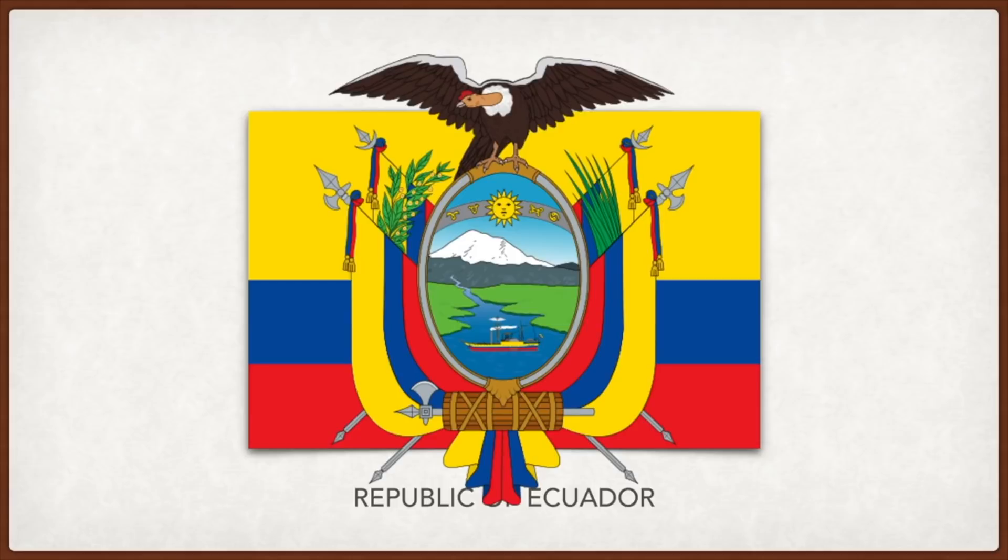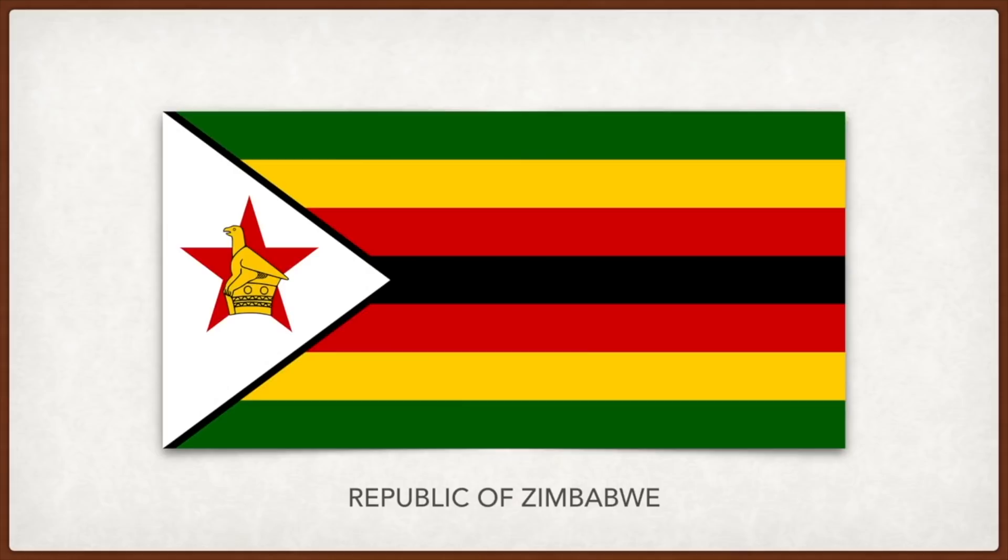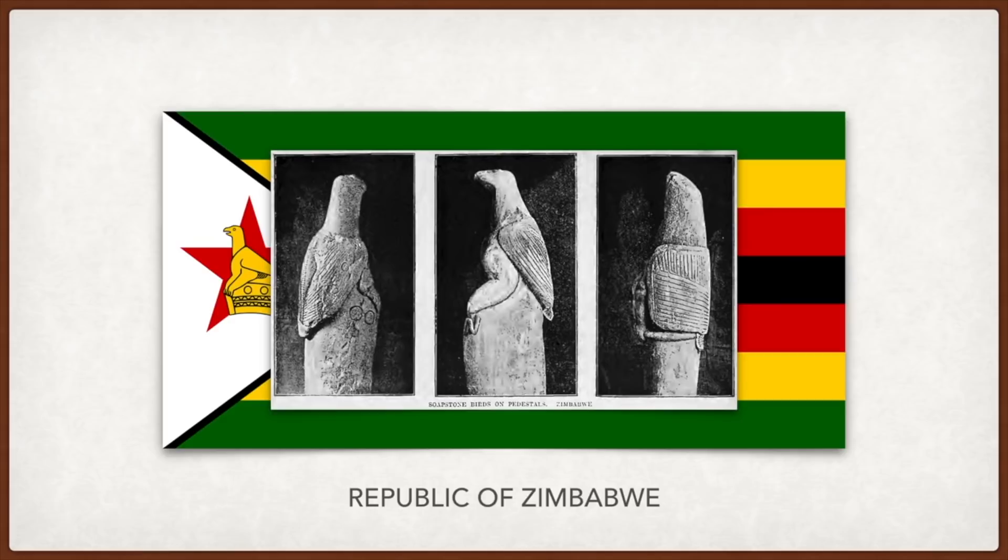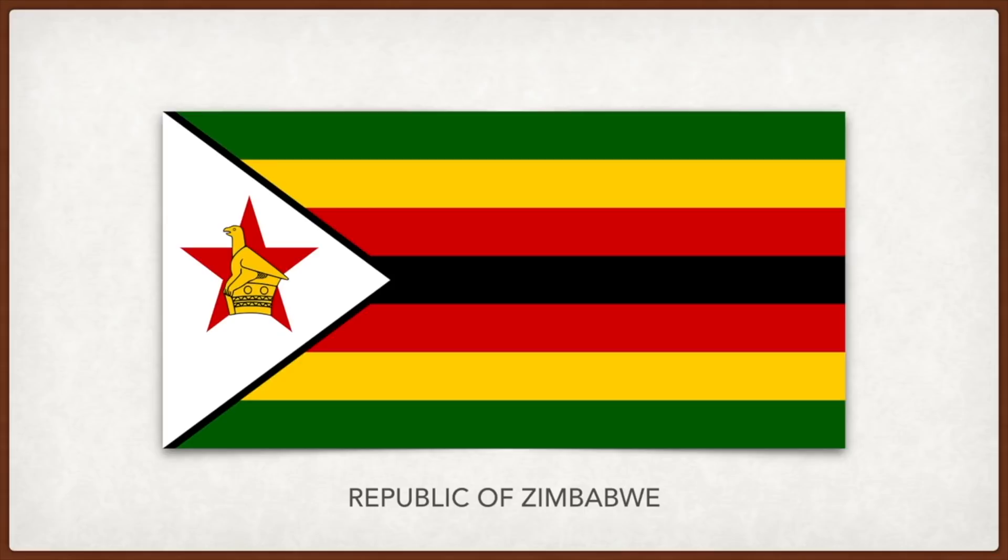Zimbabwe: the bird represents a statue found in the ruins of Great Zimbabwe, the old capital city of the medieval kingdom of Zimbabwe, symbolizing the history of Zimbabwe. The red star stands for the nation's aspirations, green is for agriculture, yellow is for the country's mineral wealth mainly gold, red is for the bloodshed for independence, and black is for the people of Zimbabwe.